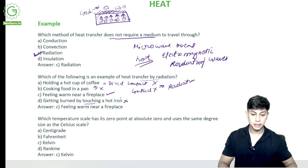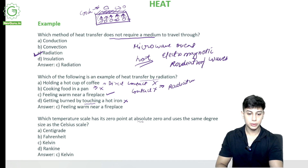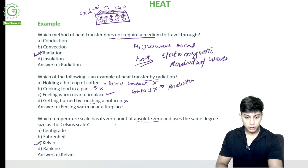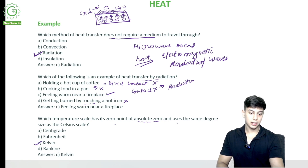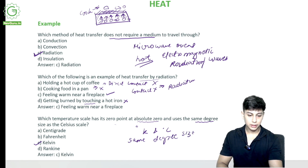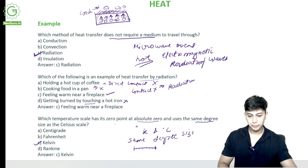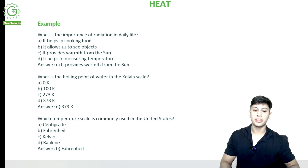Which temperature scale has its zero point at absolute zero and uses the same degree size as the Celsius scale? By the first part of the question alone — zero point at absolute zero — it is Kelvin. And Kelvin and degree Celsius both have the same degree size; from one degree to the next, the interval is the same for both, but we measure them differently.